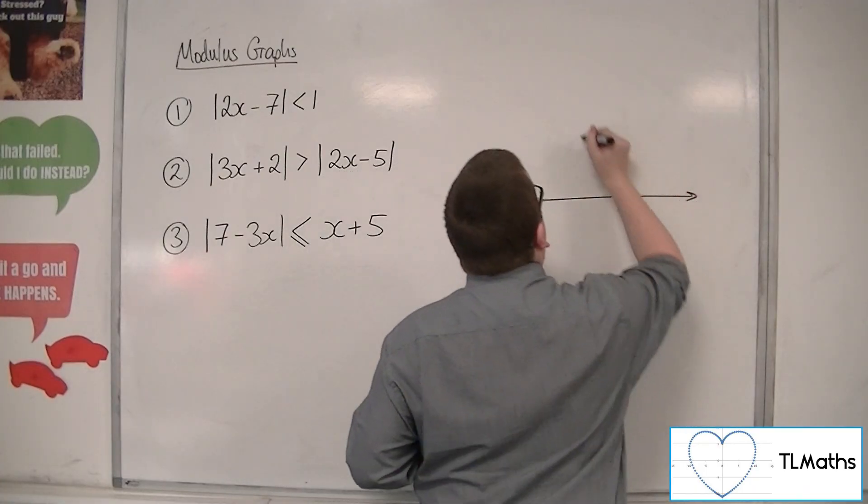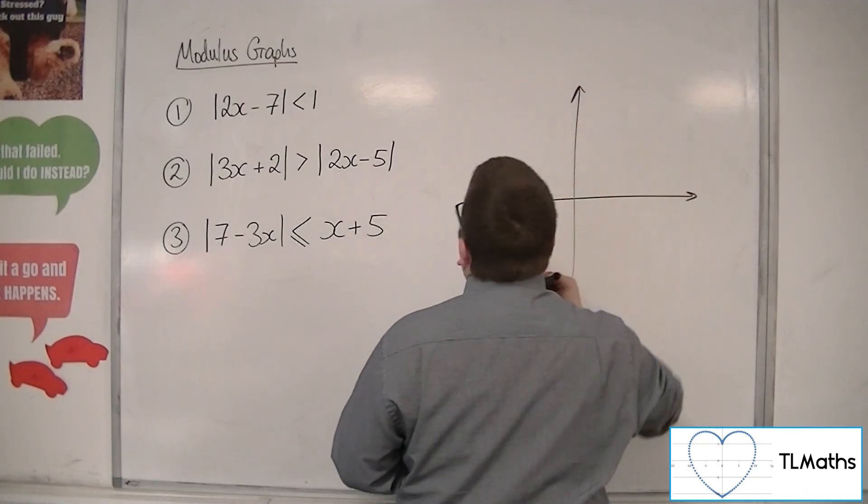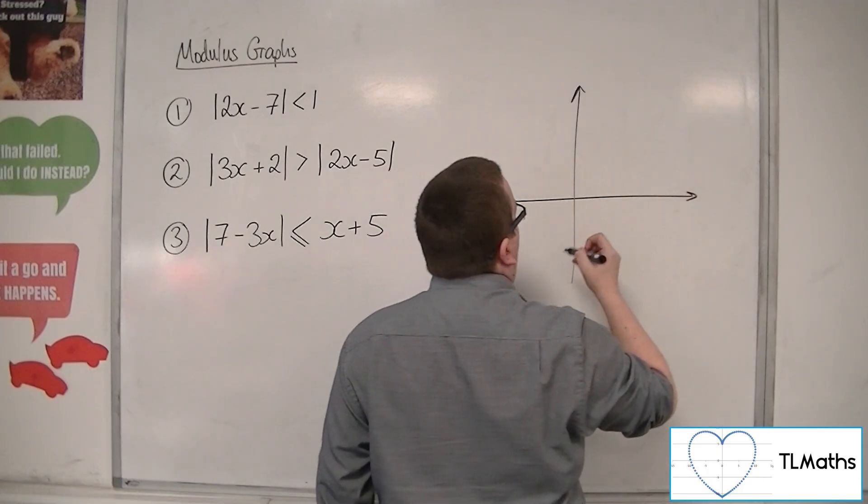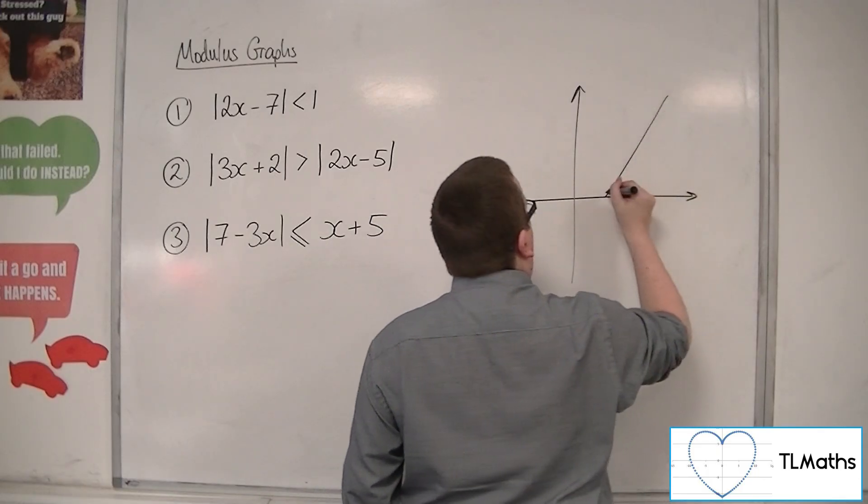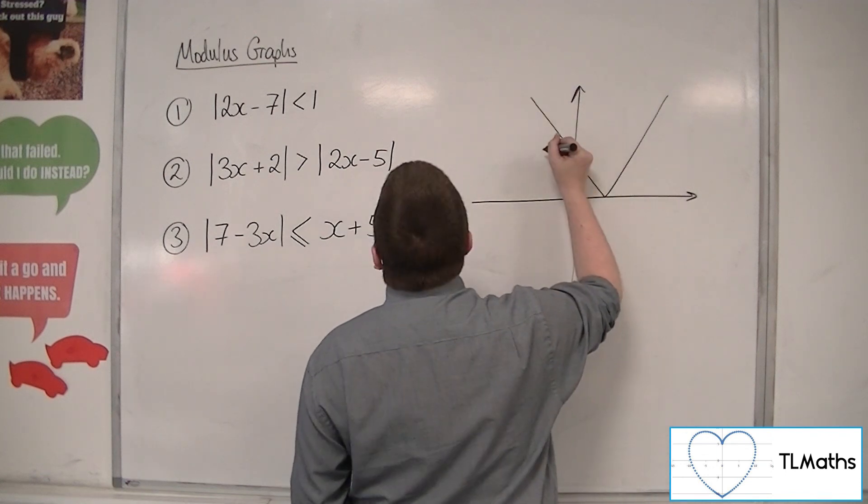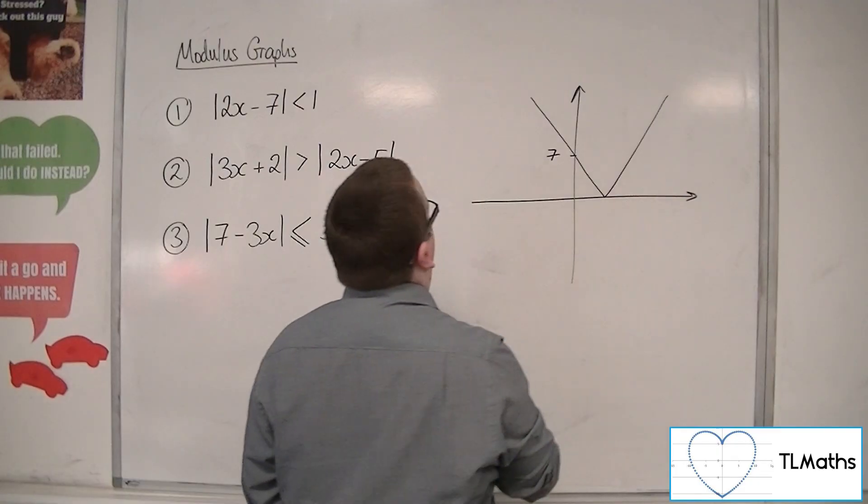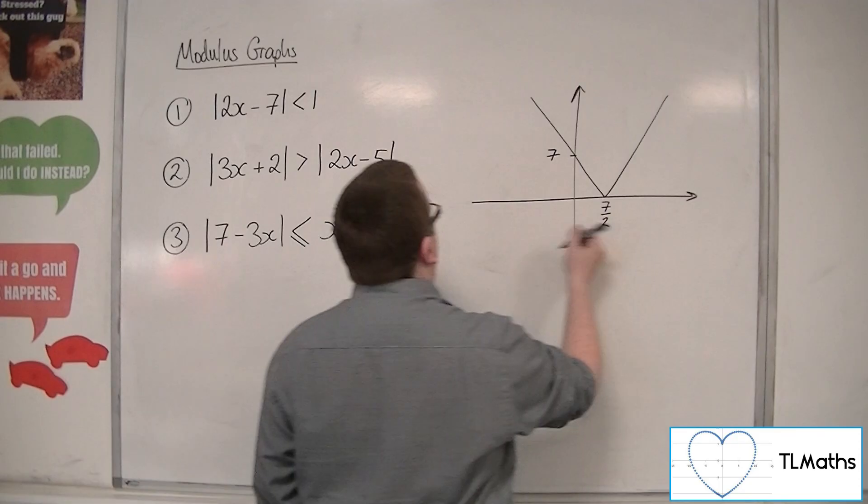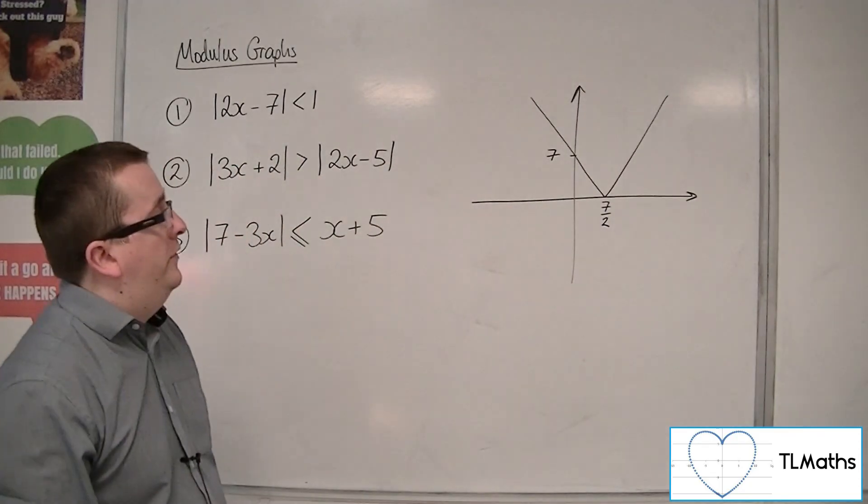2x minus 7 would be a straight line going through minus 7 on the y-axis, so the line would be coming down like that, and then it would bounce up to hit 7. And this point here would be 7 halves in order to make that modulus 0.